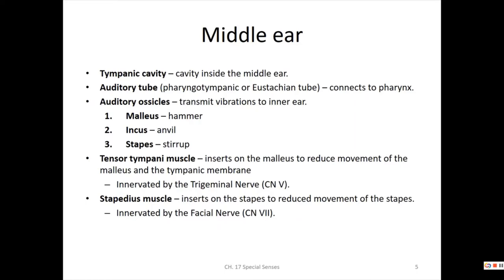There are two muscles of the middle ear: the tensor tympani and the stapedius. The tensor tympani is inserted on the malleus and pulls to tighten, limiting movement of the malleus and the tympanic membrane — it tenses the tympanic membrane. It's controlled by the trigeminal nerve. A good mnemonic: TTT — tensor tympani, trigeminal.